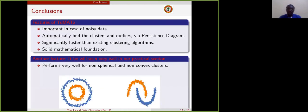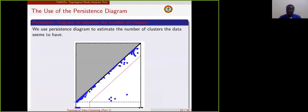So in conclusion, we can say that tomato algorithm is very useful when we are dealing with noisy data. Moreover, it automatically enables us to know the clusters and the outliers thanks to the persistence diagram. As I explained here, here are the outliers, here is the noise.